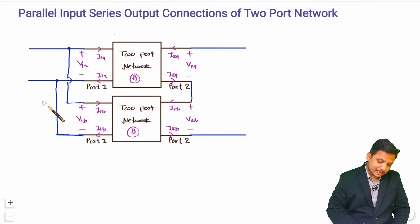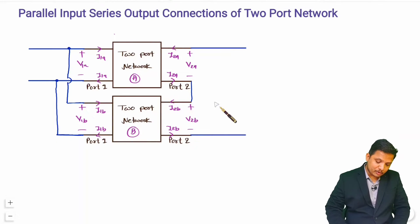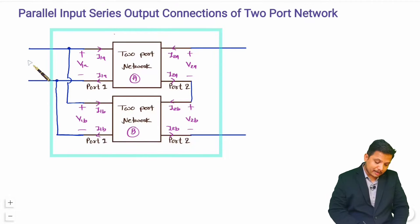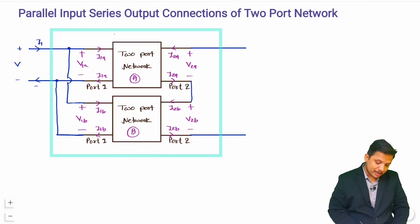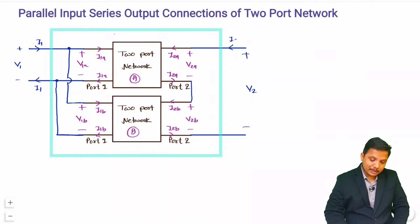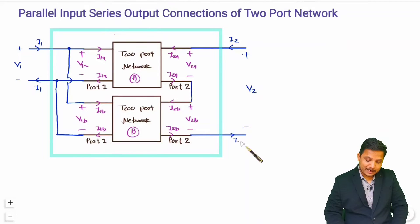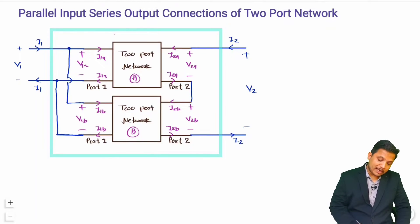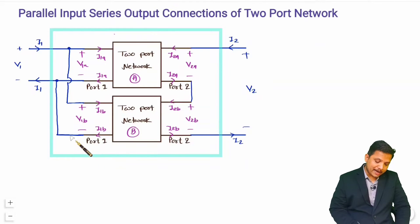I'll be considering this combined connection as an equivalent Resultant Two-Port Network. For this Resultant Two-Port Network, Port 1 has voltage V1, current going inside is I1, and current coming out is I1. At Port 2 we have voltage V2, current going inside is I2, and current coming out is I2.